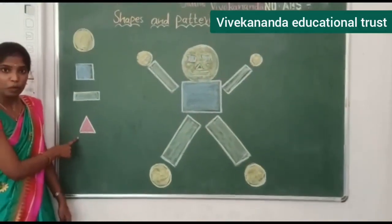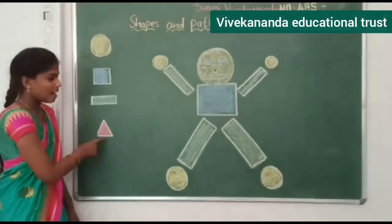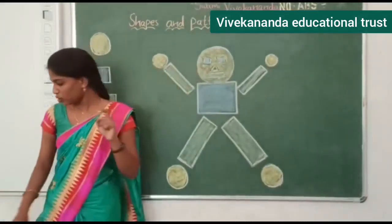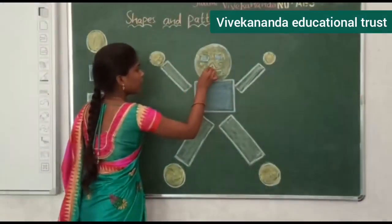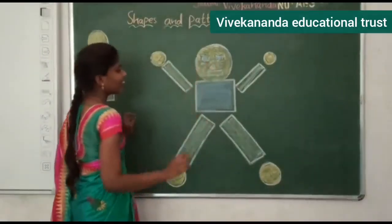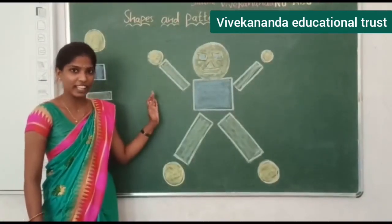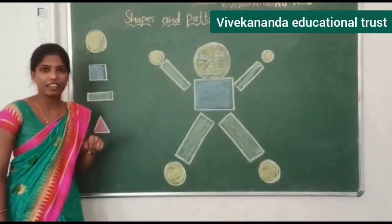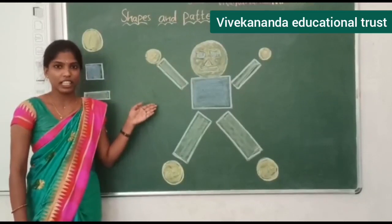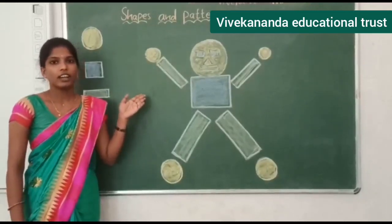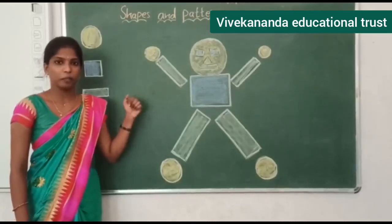Next, what shape is this? Triangle. Triangle is in what colour? Red colour. So we have to give red colour to triangle. The nose is triangle shape, so give red colour. How does the Robo look? So colourful! So try to do this activity at your home — draw any objects using the shapes.